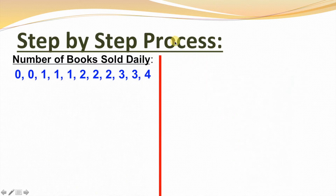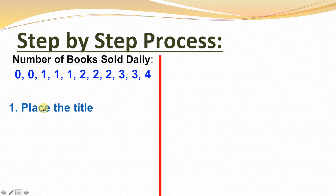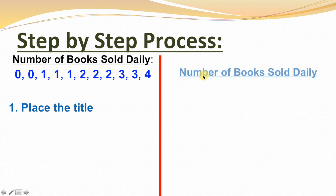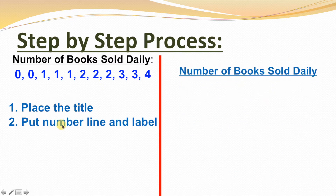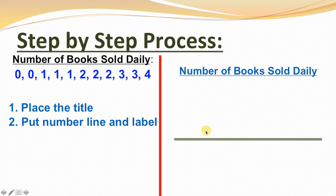Now for the step-by-step process. Here's our data for the number of books sold daily in order from least to greatest. Step 1, place the title. We're talking about the number of books sold daily, so we'll just put our title here. Step 2, put the number line and the label. We'll put a number line down here and then put a label that will represent what each x or dot is going to represent. Since we're talking about the number of books sold daily, this will just be the number of books.